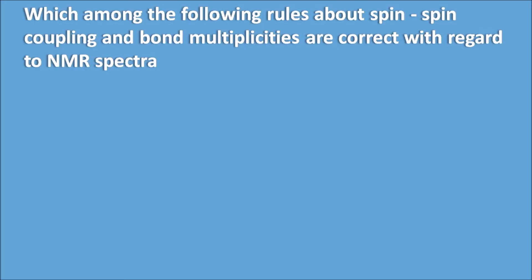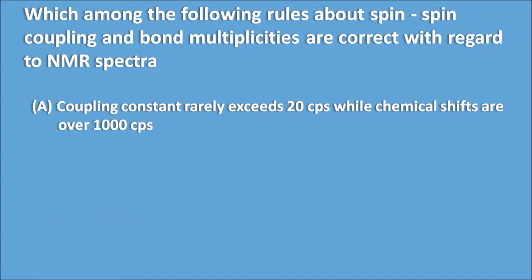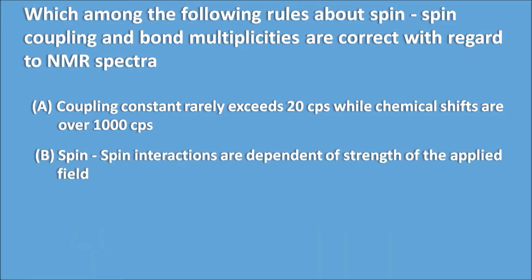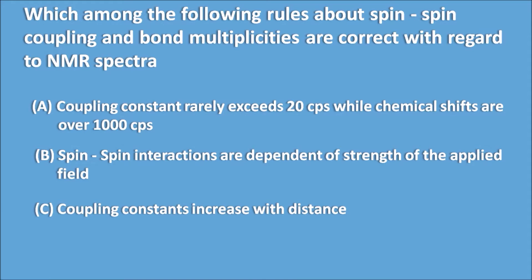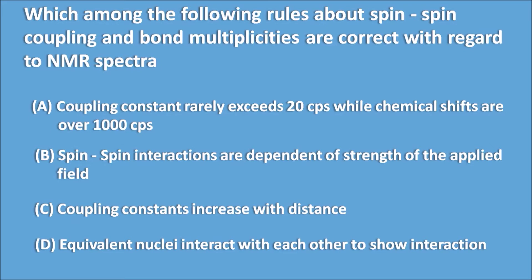Which among the following rules about spin-spin coupling and bond multiplicities are correct with regard to NMR spectra? a. Coupling constants rarely exceed 20 CPS while chemical shifts are over 1000 CPS. b. Spin-spin interactions are dependent on the strength of the applied field. c. Coupling constants increase with distance. d. Equivalent nuclei interact with each other to show interaction.